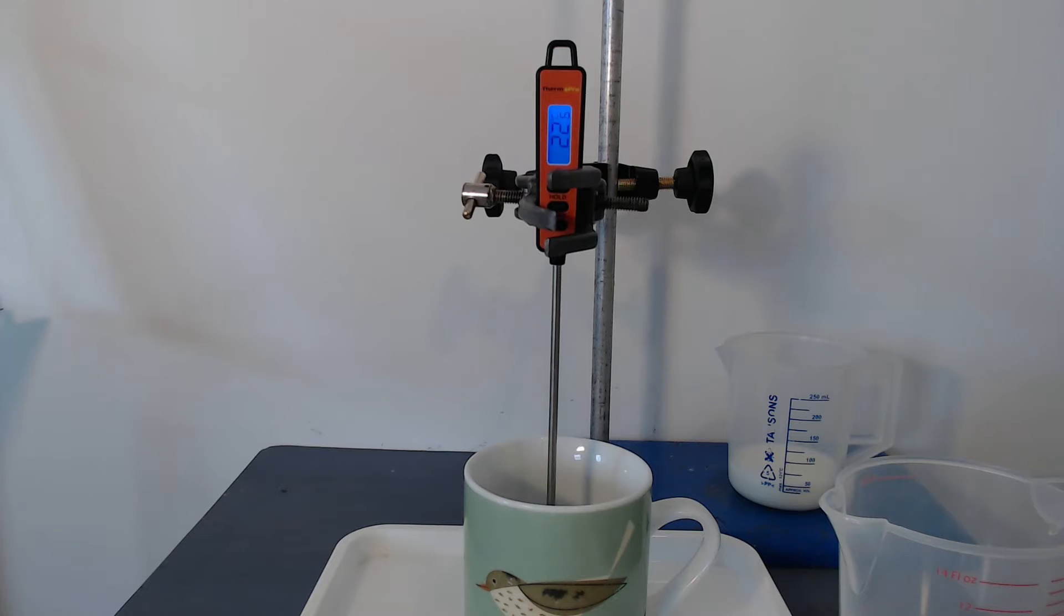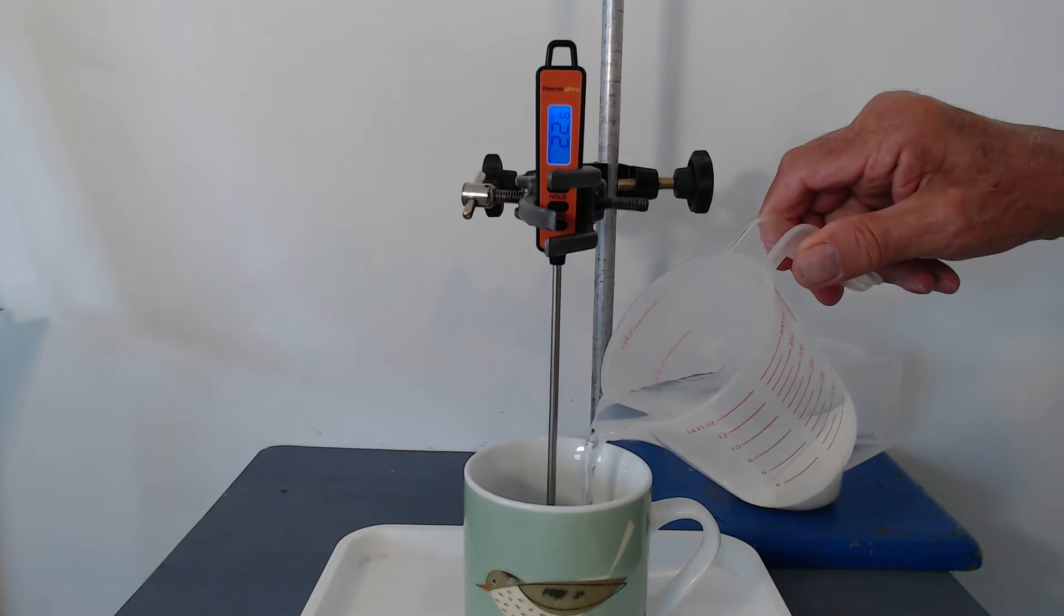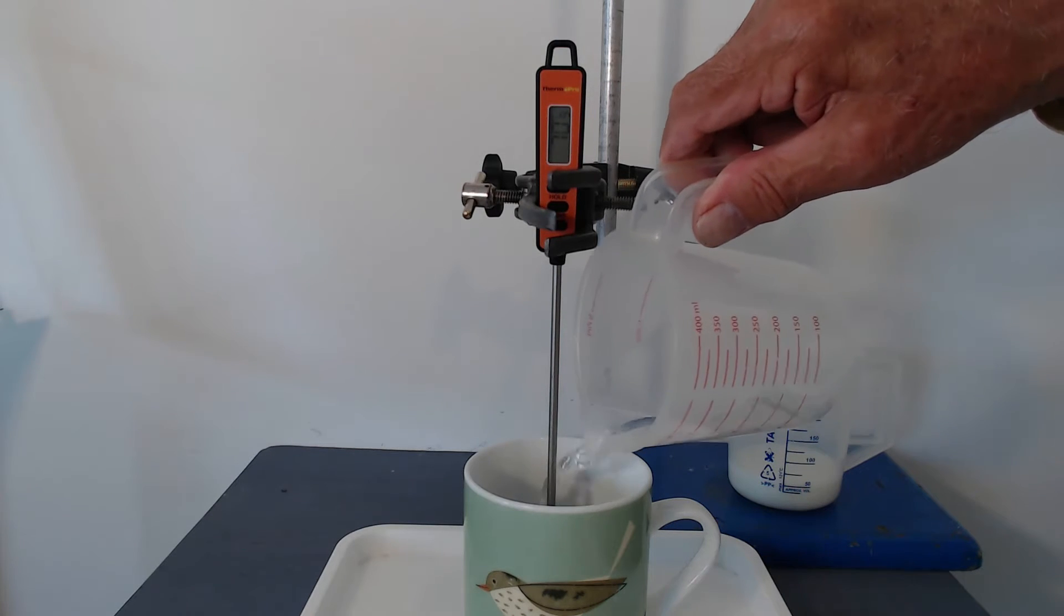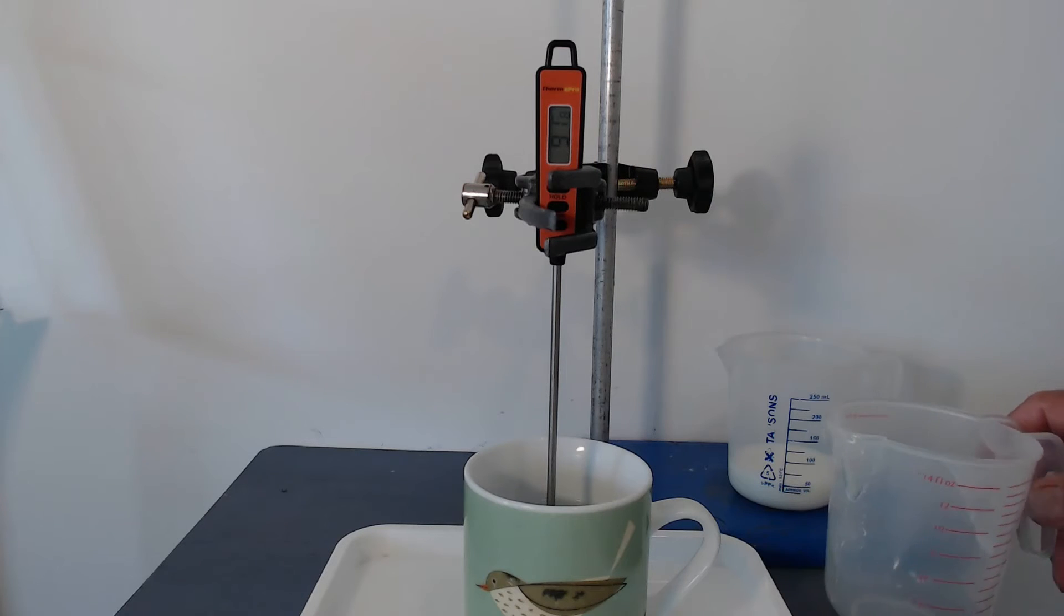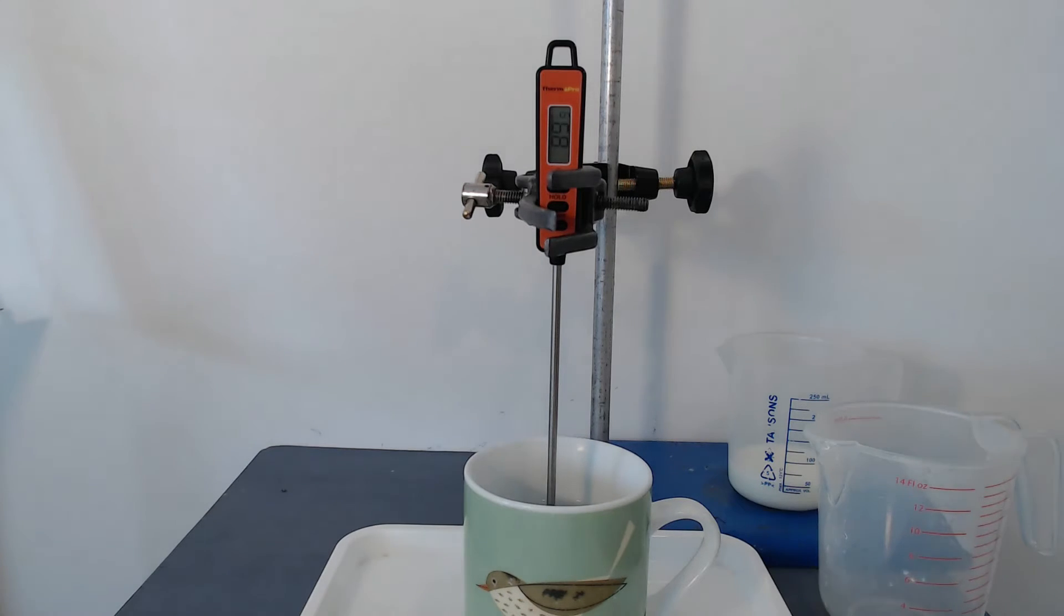Right, we've now got boiling water here. I need to measure exactly 200 milliliters into my mug and we'll start the watch now. Right, now the probe has been placed in the middle of the liquid. So we'll just wait now.